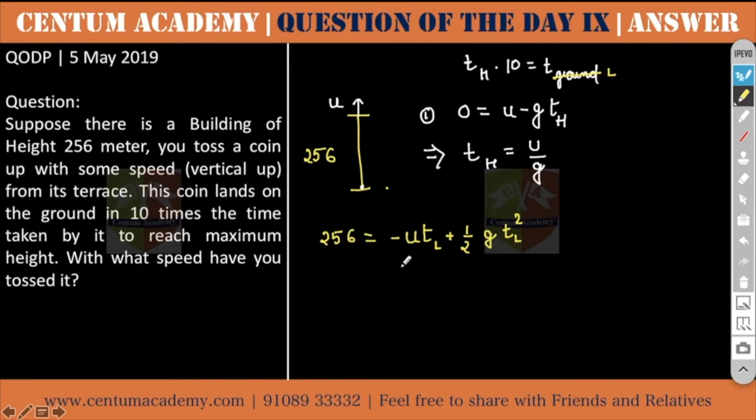What has been provided to you is that this t_l is 10 times t_h, so can't I write the same equation as 256 equal to minus u 10t_h plus half g again 10t_h square.